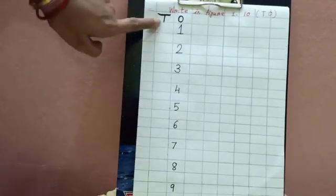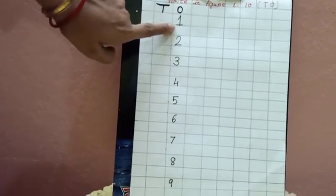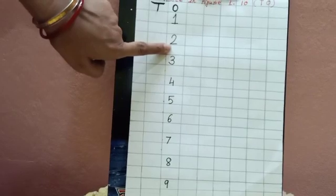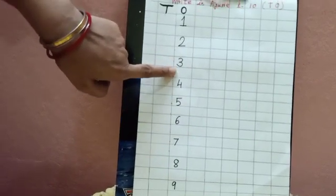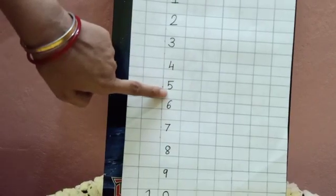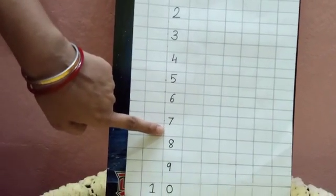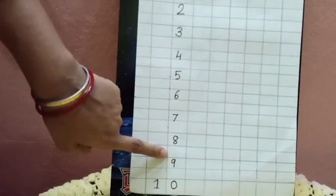Under 1's you will write 1, then leave the box. 2, then leave the box. 3, leave the box. 4, leave the box. 5, leave the box. 6, leave the box. 7, leave the box. 8, leave the box. 9,